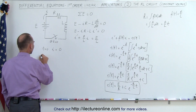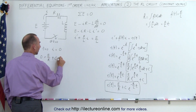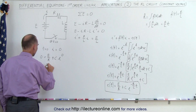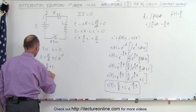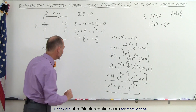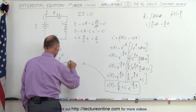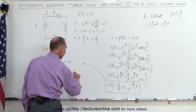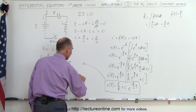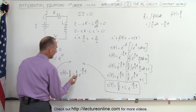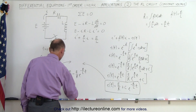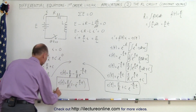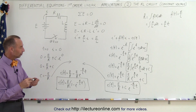Plugging in T equals zero: zero equals E over R plus C times E to the zero power, which is one. So C equals negative E over R. Substituting back, the current as a function of time equals E over R minus E over R times E to the minus R over L times time. Factoring out E over R, we get I(t) equals E over R times the quantity one minus E to the minus R over L times time.